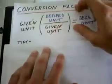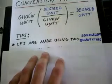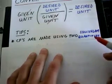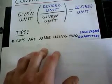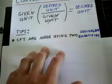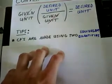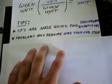So a couple of tips on working with conversion factors: First, conversion factors are always made using two equivalent quantities. If the quantities in your conversion factor aren't equivalent, then that's not a conversion factor, so keep that in mind.